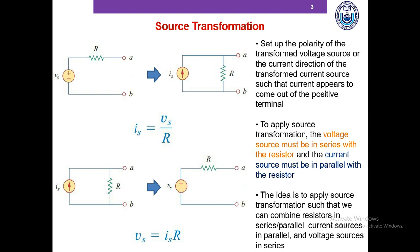You might wonder why anyone would want to transform a voltage source into a current source or vice versa. The idea is that we apply source transformation so that we can combine resistors in series or parallel, current sources in parallel, and voltage sources in series. As we continue to combine two or more elements, we get smaller and smaller circuits which are much easier to handle and analyze.